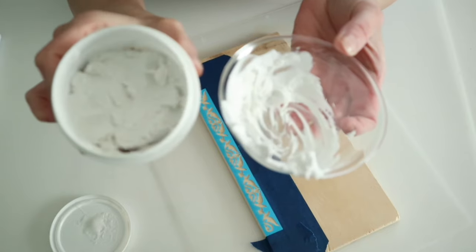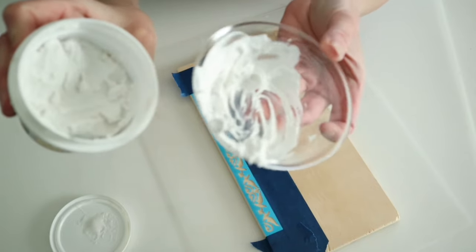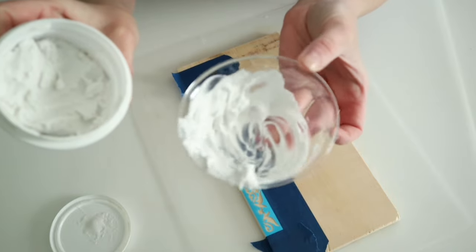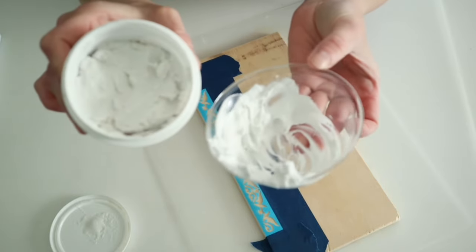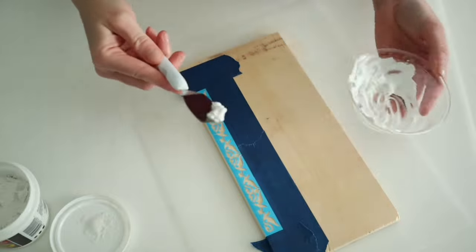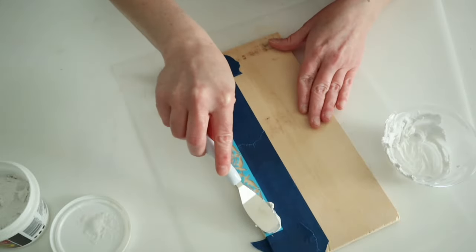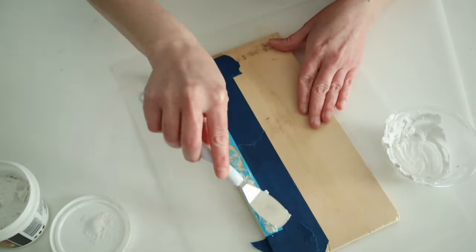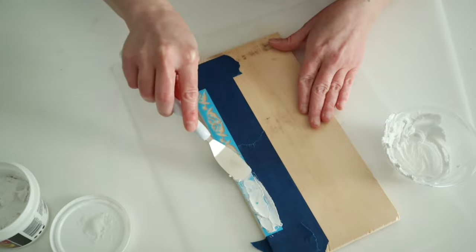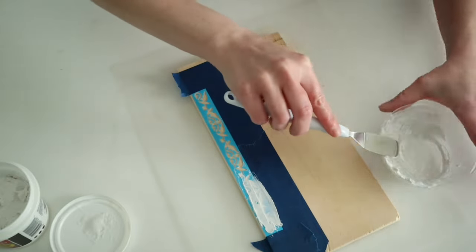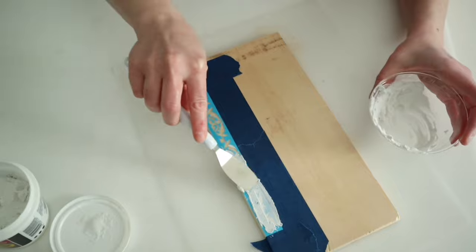Now, the key to using Dollar Tree spackling for these projects is you want to put some in a little container and then you're going to add a few drops of water because you want this to be a paste. In the container, you can tell it's kind of dry, but if you make it into a paste, it's more easily spreadable.